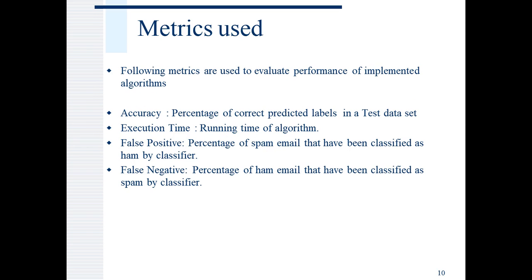Performance of implemented algorithms is evaluated on the basis of following four metrics: Accuracy, execution time, false positive and false negative. Accuracy means the percentage of correct predictions from the classifier model divided by total number of test data set into 100. Execution time is the running time of the algorithm. False positive means percentage of spam emails that have been wrongly classified as ham by the classifier.